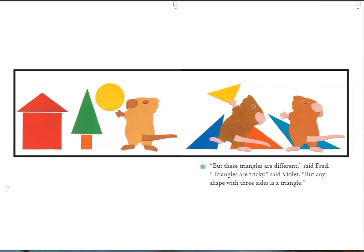"But these triangles are different," said Fred. "Triangles are tricky," said Violet. "But any shape with three sides is a triangle."